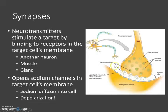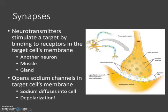Now, those neurotransmitters are able to stimulate the target by binding to receptors in the target's cell membrane. The target might be another neuron,